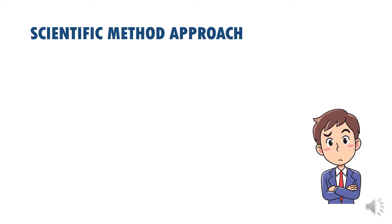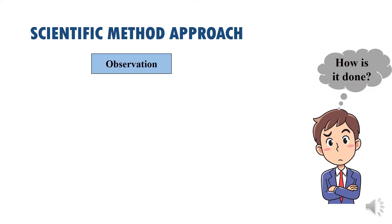Now let's discuss the scientific method approach used in Management Science. The scientific method approach is a five-step process for resolving management problems or any type of problem, and we must go through this process to achieve our desired resolution. The first step is observation — we must first understand what the situation is all about. You cannot recommend solutions to a problem you do not understand, so you must observe first.